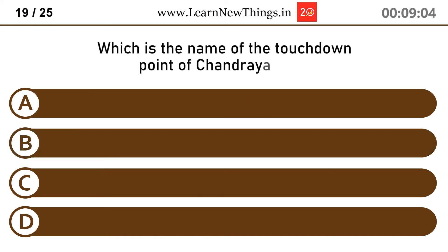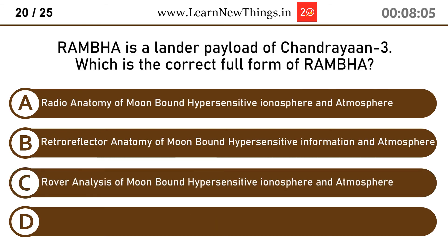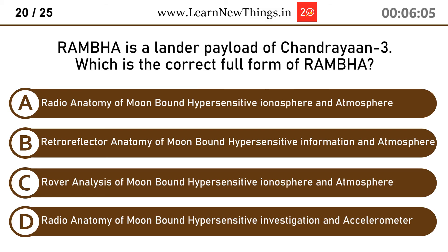Which is the name of the touchdown point of Chandrayaan 3? Shiv Shakti Point. RAMBHA is a lander payload of Chandrayaan 3. Its full form is: Radio Anatomy of Moon Bound Hypersensitive Ionosphere and Atmosphere.